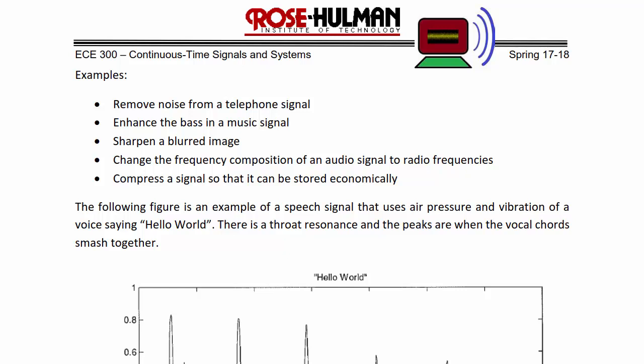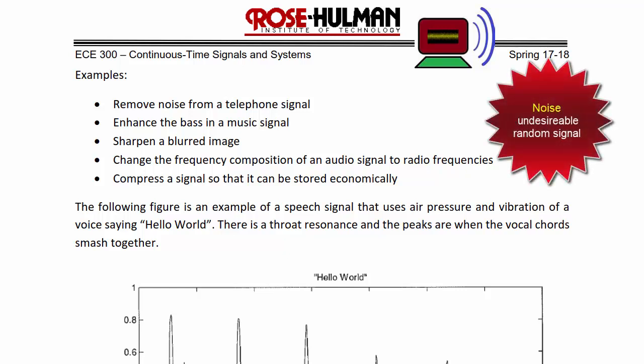Some examples of things you could use the tools in this course for include removing noise from a telephone signal, enhancing the bass in a music signal, sharpening a blurred image, changing the frequency composition of an audio signal to radio frequencies, or compressing a signal so that it can be stored economically. In signals, noise is an undesirable random signal, whereas interference is an undesirable but non-random signal.